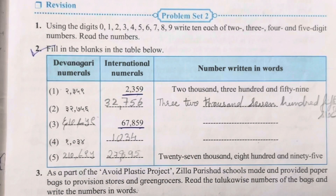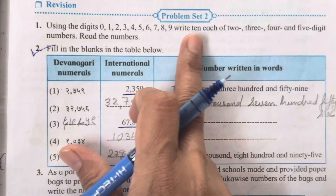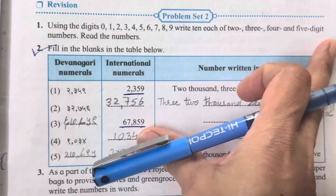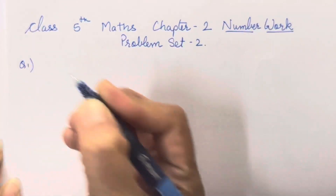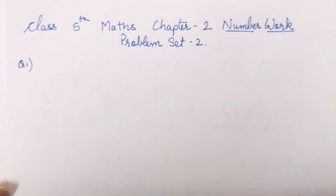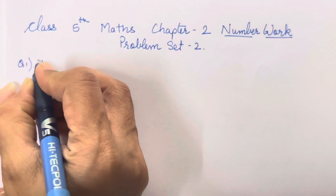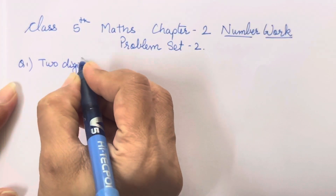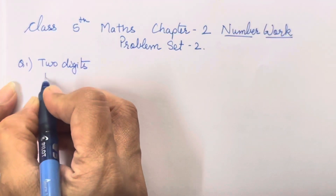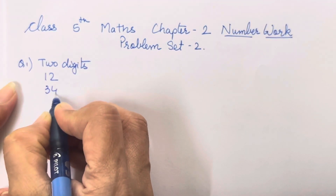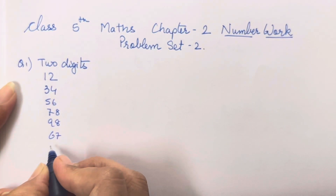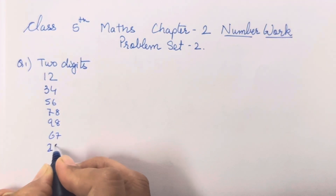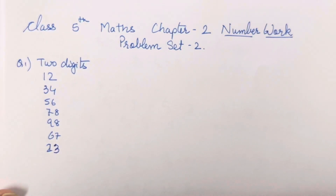Let's start with the first question: using these digits, write 10 each of 2, 3, 4, and 5-digit numbers. You all have to write 2-digit numbers from the set 2, 3, 4, 5. We will write the first two-digit numbers - it will be very easy. For example: 12, 34, 56, 78, 98, 67, and so on. We will write 23 instead of 22 because we don't need to repeat digits.